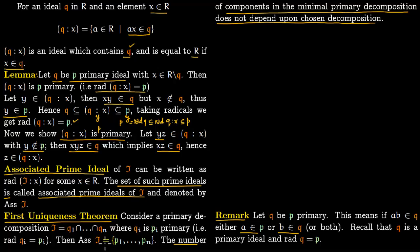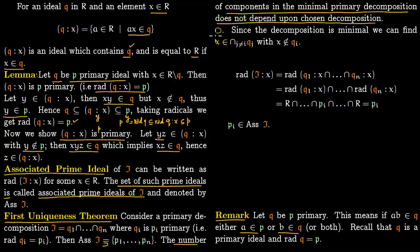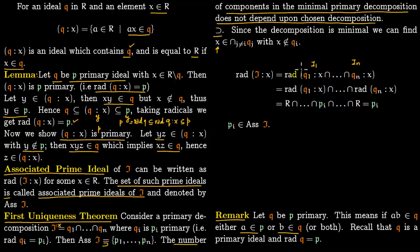For the first direction, since the decomposition is minimal, we can always find X in the intersection of all QJ with J not equal to I, but X not in QI. We take I/x, which equals Q1/x ∩ … ∩ Qn/x — this is a fact. Taking the radical of both sides, the radical can be taken inside: radical(I/x) = radical(Q1/x) ∩ … ∩ radical(Qn/x).